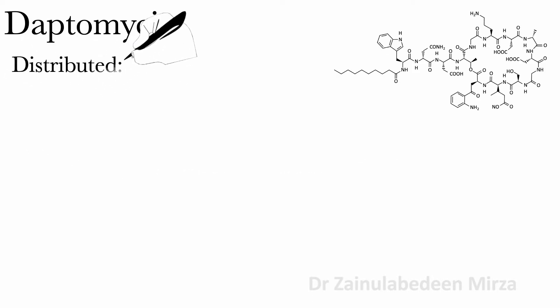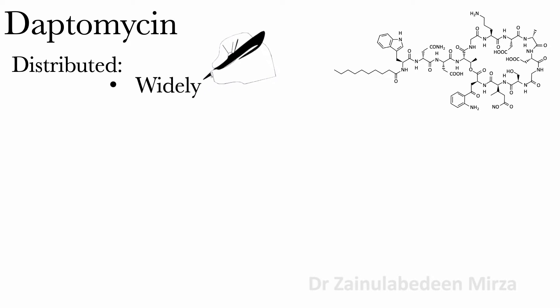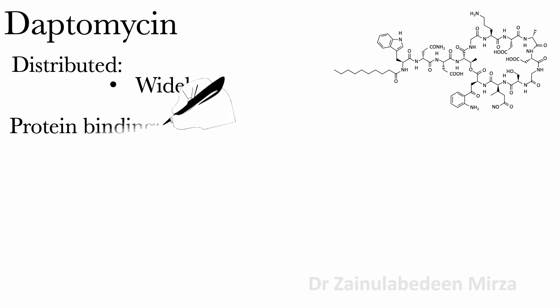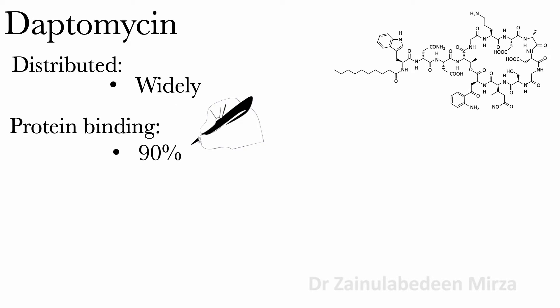Daptomycin is widely distributed. Protein binding of Daptomycin is about 90%, and it is excreted in the urine.